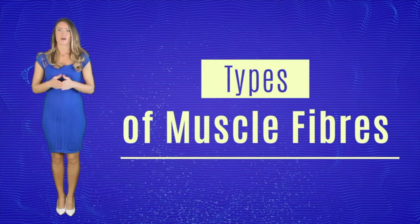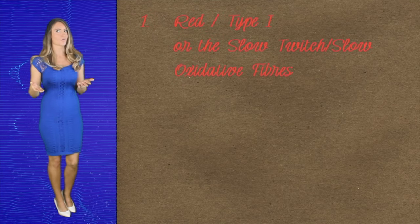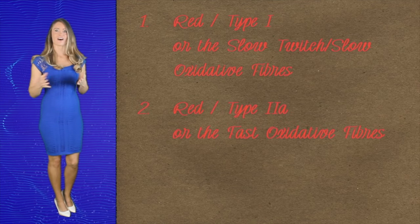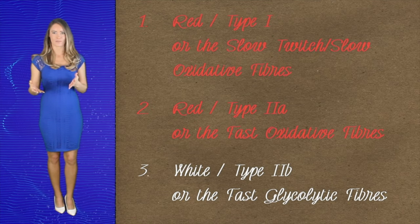Types of muscle fibers. Muscle fibers also have types. There are three to be more specific. Type 1 or the red type, which is the slow twitch, slow oxidated fibers. Type 2 or the fast oxidated fibers or type 3 the white type or the fast glycolic fibers.